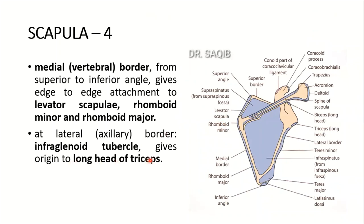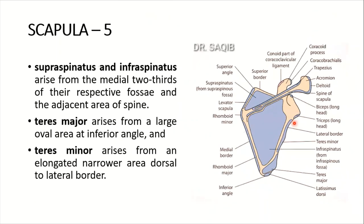The long head of triceps is attached to the infraglenoid tubercle. Supraspinatus is attached to the medial two-thirds of the supraspinous fossa, and infraspinatus is attached to the medial two-thirds of the infraspinous fossa. Teres major arises from a large oval area at the inferior angle. Teres minor arises from an elongated narrower area dorsal to the lateral border.